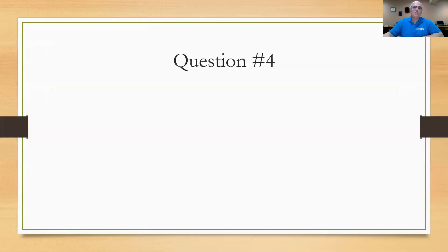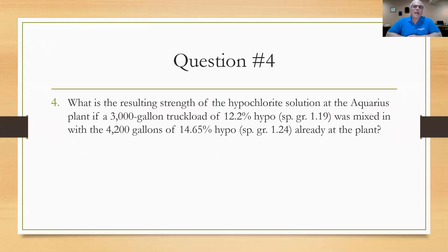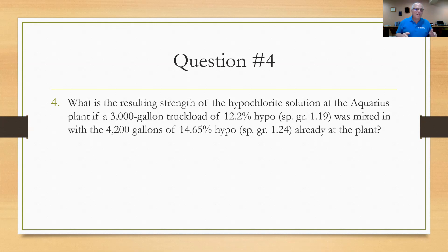Question number four: What is the resulting strength of the hypochlorite solution at the Aquarius plant if a 3,000-gallon truckload of 12.2% hypo with specific gravity 1.19 was mixed into 4,200 gallons of 14.65% hypo with specific gravity 1.24 already at the plant? This is a real-world situation — a truck arrives when residual solution is still in the tank, and you need to know the combined strength to continue disinfecting properly. The formula for mixing two solutions is: percent strength of mix equals pounds of chemical from solution one plus solution two, divided by total pounds of solution, times 100.